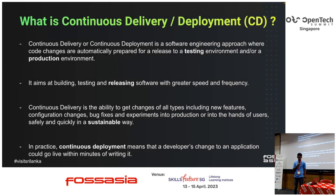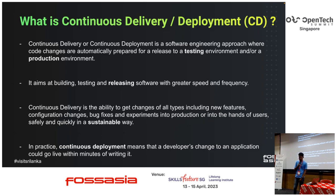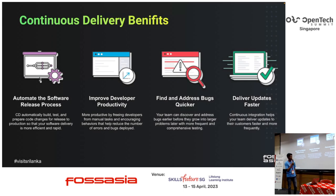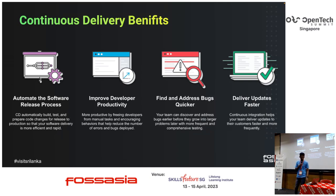Let's talk about what is CD. CD is a software engineering approach where code changes can automatically deploy into a configurable environment — it could be a testing or production environment. In simple terms, developers' code changes can go live within a minute after writing it. The benefits of using Continuous Delivery include an automated process of software releasing, so you don't need to build and manually take things to your server. Developer productivity is high, you can find and address bugs earlier, and you can deliver updates fast.